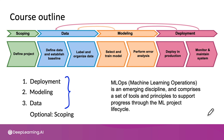For example, at Landing AI, where I'm CEO, we used to do a lot of these steps manually, which is okay but slow. After building an MLOps tool called Landing Lens for computer vision applications, all these steps became much quicker. The key idea in MLOps is systematic ways to think about scoping, data, modeling, and deployment, along with software tools to support the best practices.